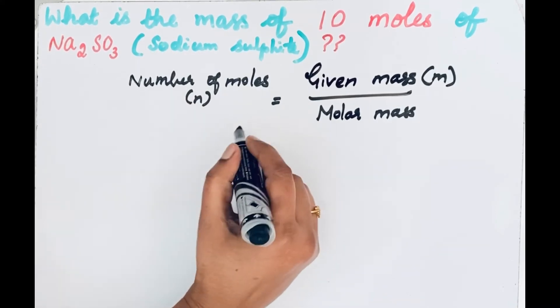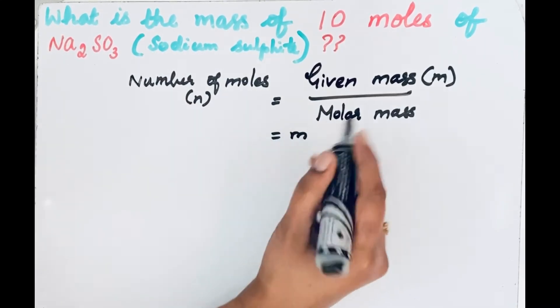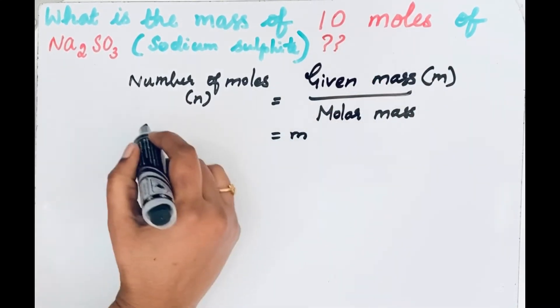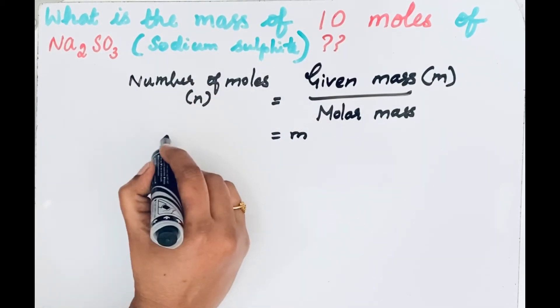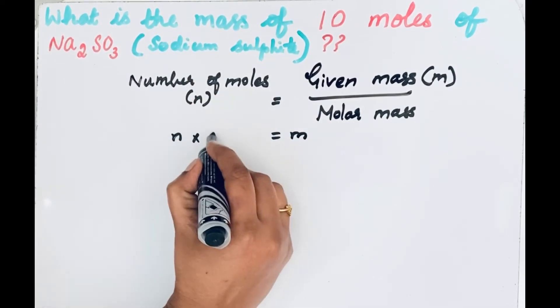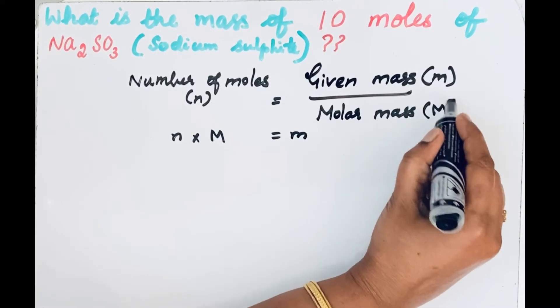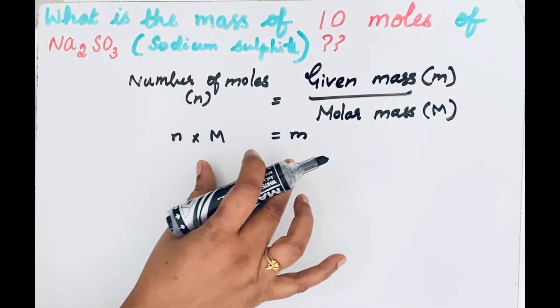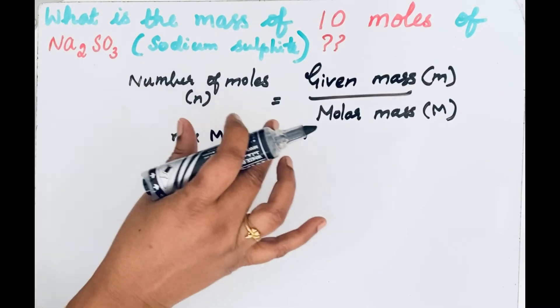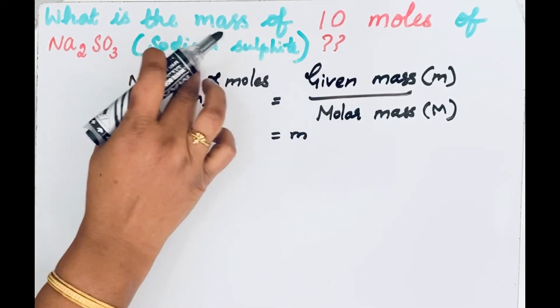m, let us keep it here. Molar mass we will bring to this side: n times capital M. So to find the molar mass, first we are going to find molecular mass of sodium sulfite.